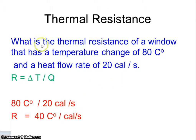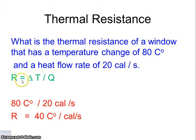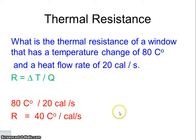Let's take a look at a problem. What is the thermal resistance of a window that has a temperature change of 80 Celsius degrees and a heat flow rate of 20 calories per second? Our equation is change in temperature over heat flow: 80 Celsius degrees divided by 20 calories per second gives you 4 Celsius degrees per calorie per second — that's your thermal resistance.